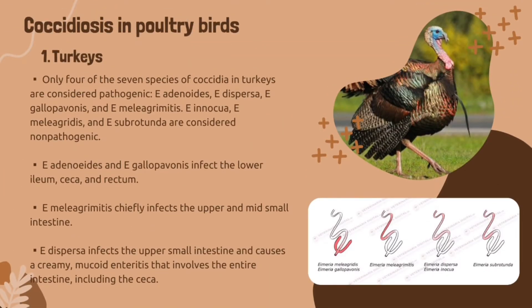Now let's proceed to coccidiosis in other poultry birds. Our first example is turkeys. Only four of the seven species of coccidia in turkeys are considered pathogenic: Eimeria adenoides, Eimeria dispersa, Eimeria gallopavonis, and Eimeria meleagrimitis. The non-pathogenic species are Eimeria innocua, Eimeria meleagridis, and Eimeria subrotunda.